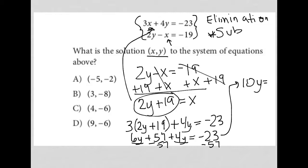So I end up with 10y equals negative 80. I divide both sides by 10, I get y equals negative 8. And as you can see the only option that has y equal to negative 8 is option B, which makes B the correct answer.